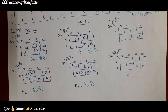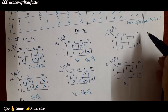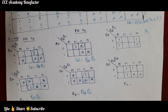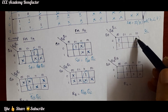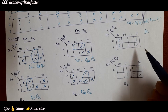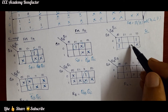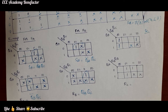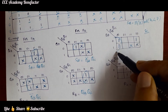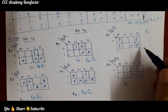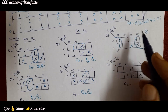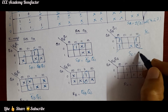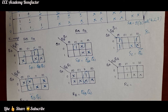The fifth K-map is for SC. SC is 1 at states 0, 2, and 4, and do not care at states 6 and 7. We form one quad with overlapping, and in the quad QC=0 is common, so SC simplifies to Q̄C.